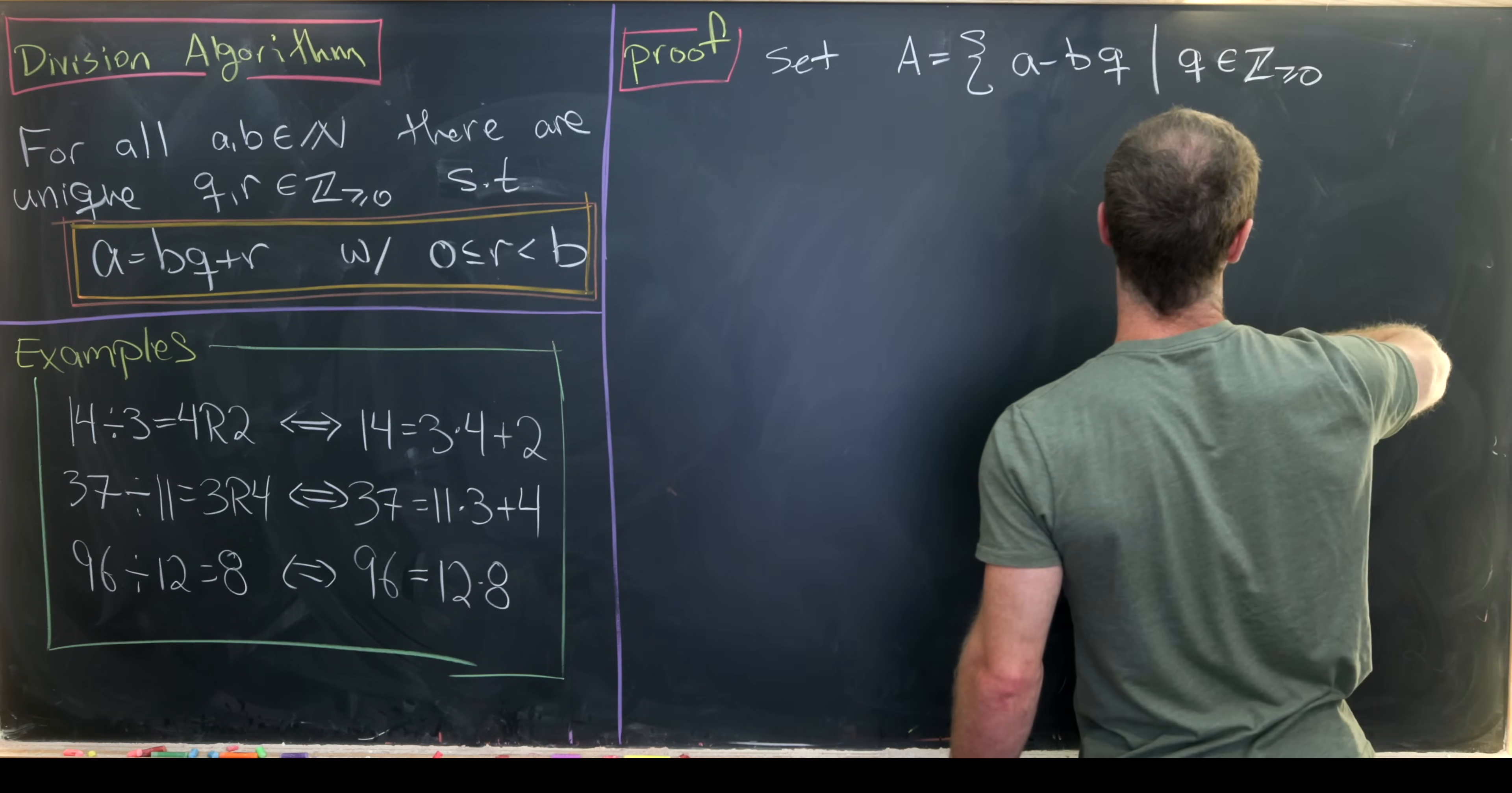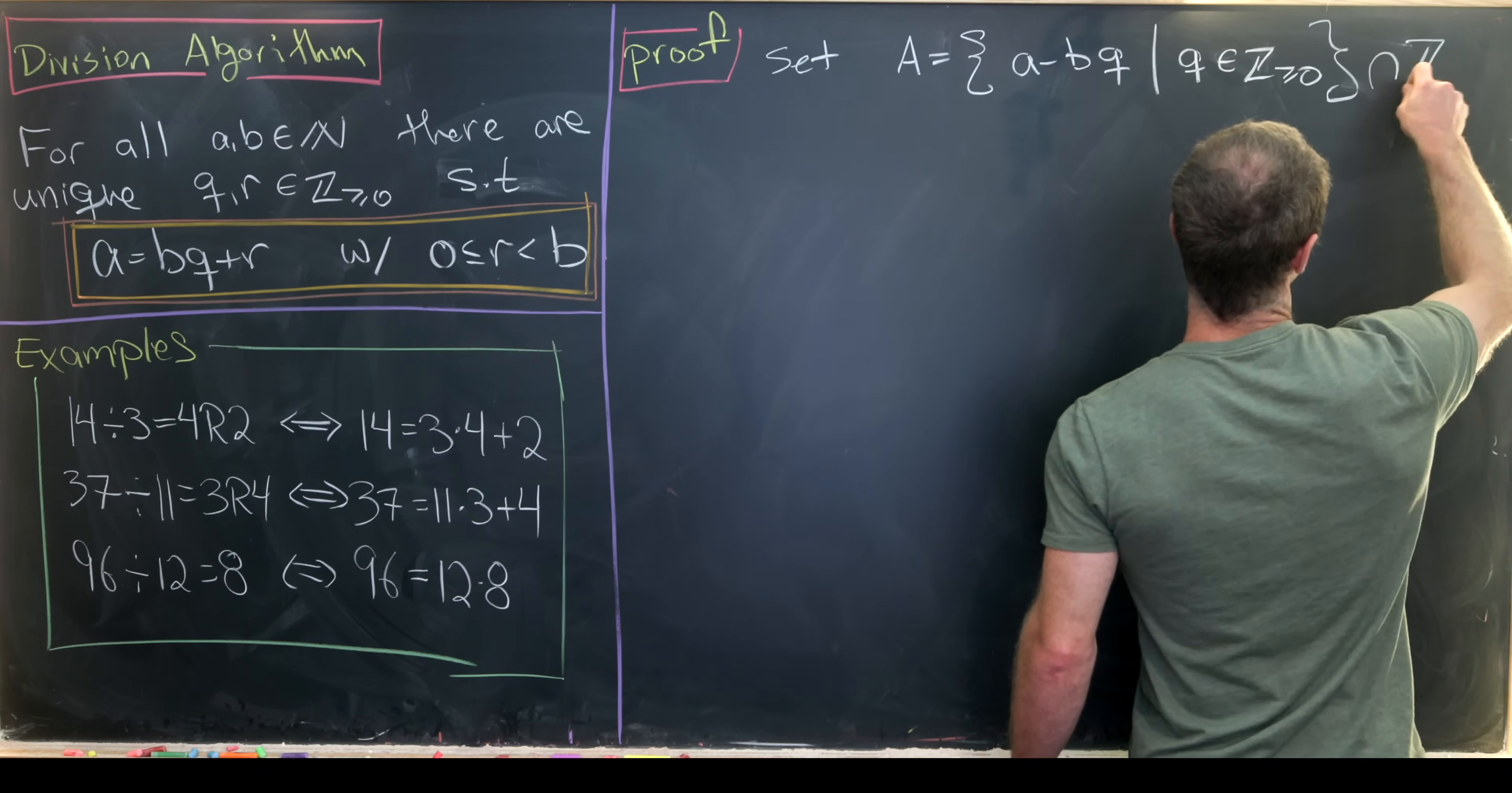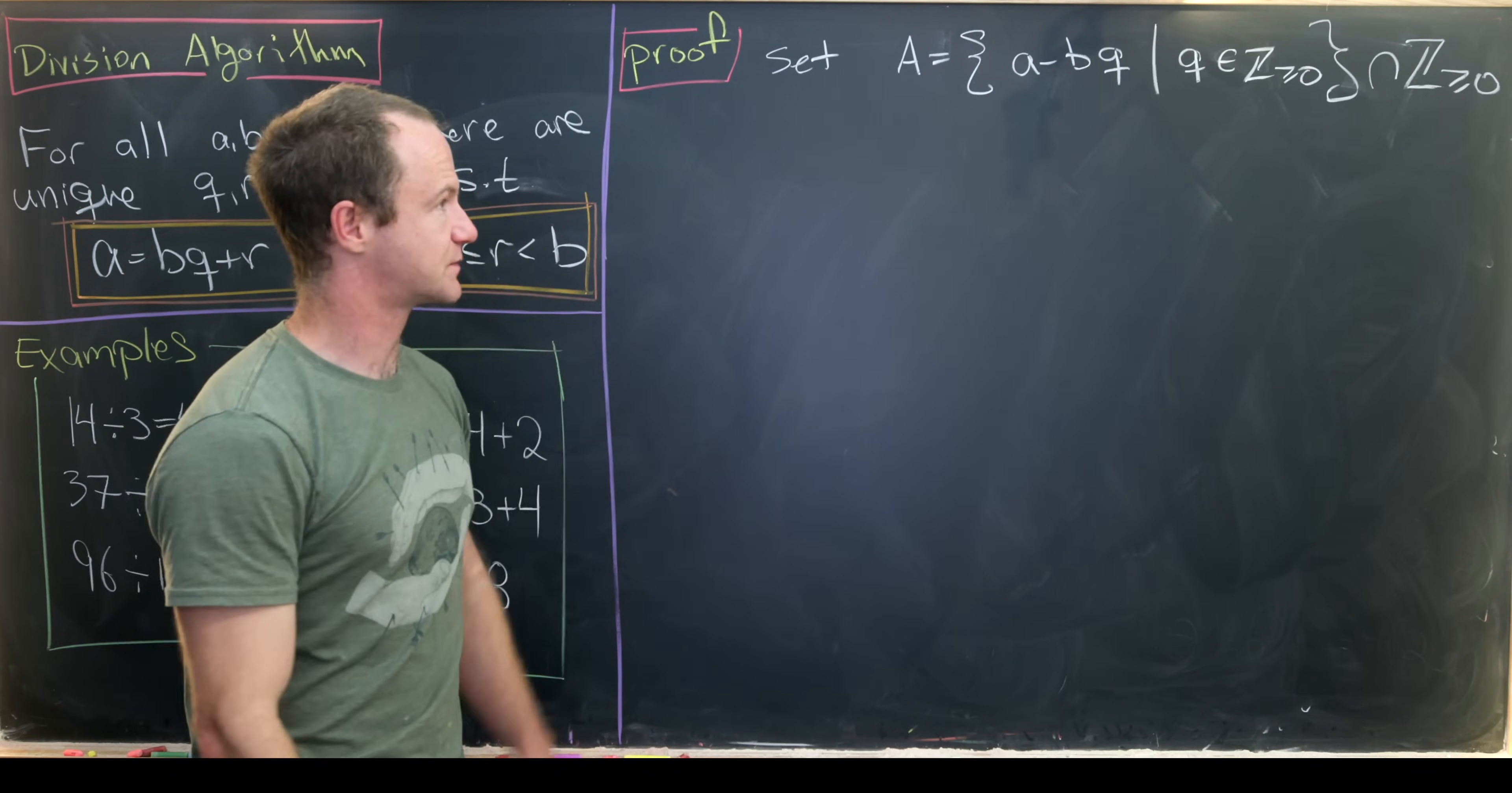and this quantity here is a non-negative integer itself. So maybe we could do that by just intersecting this whole thing with the set of non-negative integers. Okay, so I think that looks pretty good.